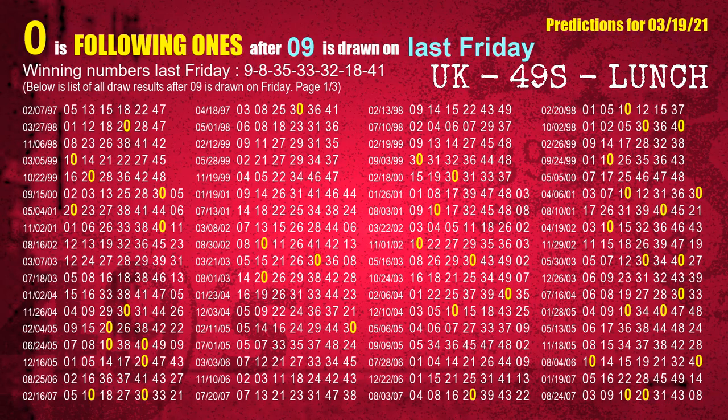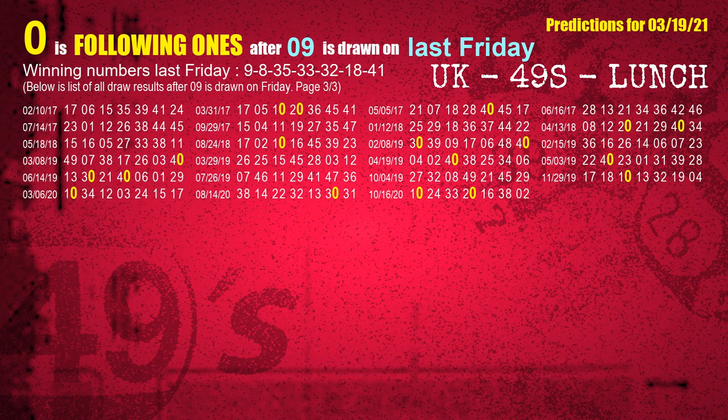We will also find out following ones through the result of the same day last week. The first winning number last Friday is 09. We list all draw results which are one week after a Friday draw with 09 as a winning number. The most frequently following units digit is 0 when 09 is the winning number on last Friday. We also highlight the units digit 0 in yellow for you.